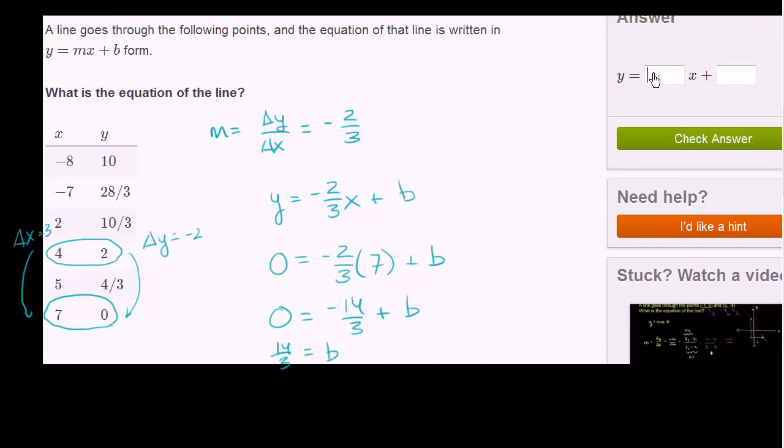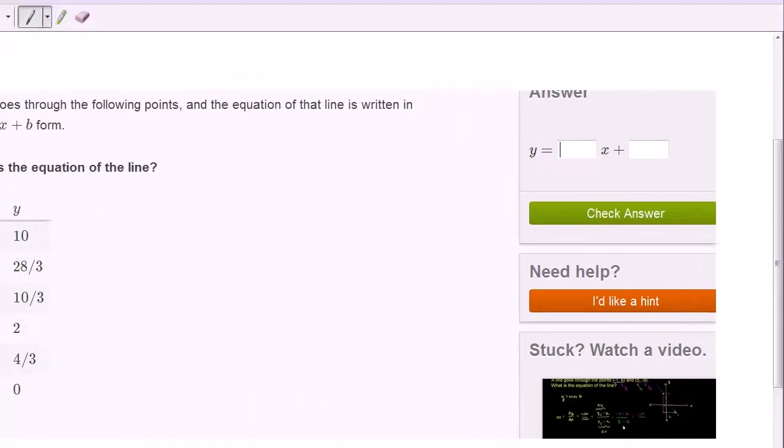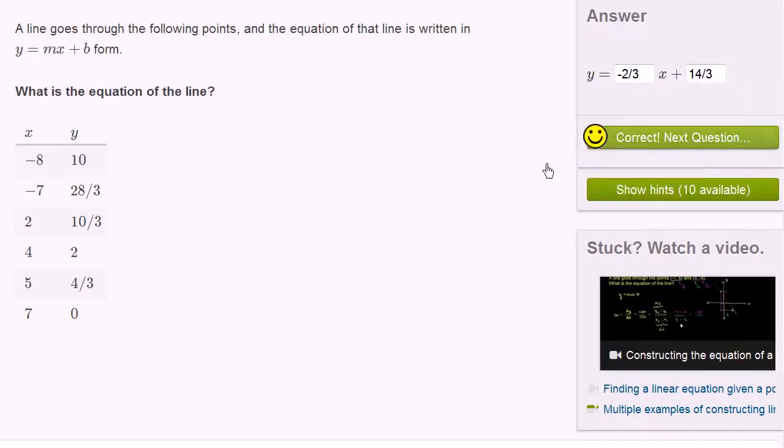So this is going to be y equals negative... Oh, let me go back to the other screen. So it's y equals negative 2 thirds x plus 14 over 3. So let me do that. So y equals negative 2 thirds x plus 14 over 3. Let's check our answer. We got it right.